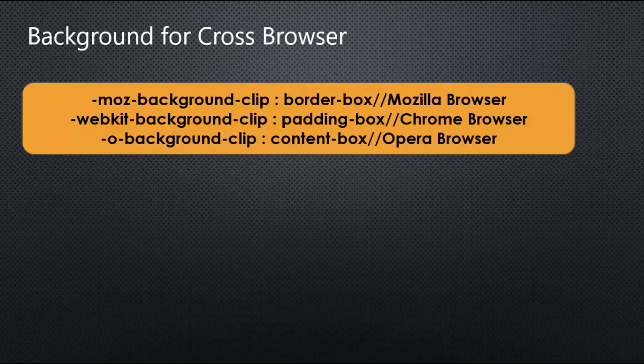Background for cross-browser support: If you are using Mozilla browser, you need to use -moz- before the background property, like -moz-background-clip. If you are using Chrome, you use -webkit- before the background property. For Opera browser, you need to use -o- before the background property. These are the cross-browser background properties.